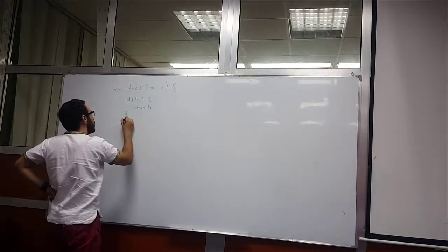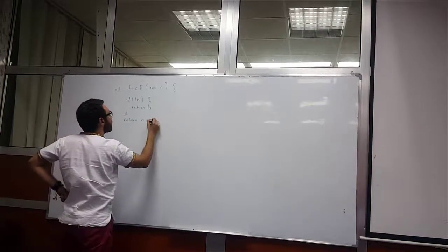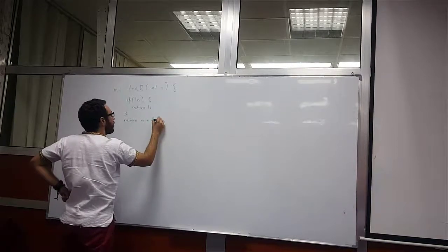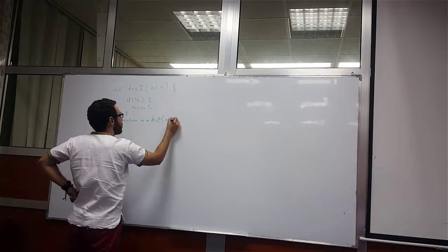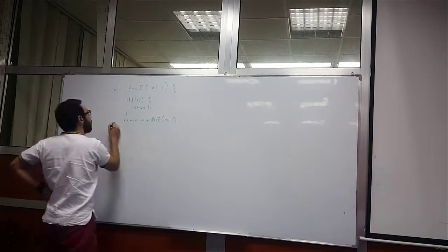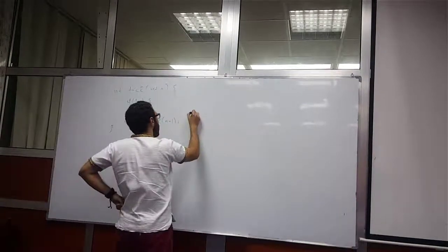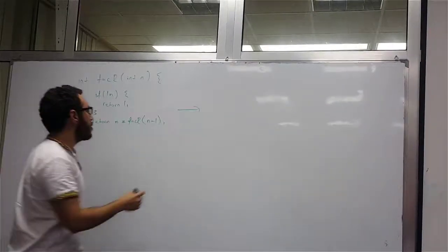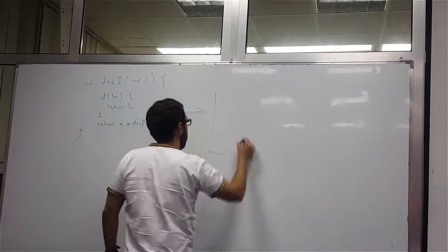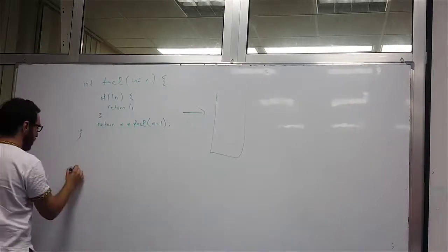Otherwise we return n times recursive factorial(n minus 1). So if you remember, once we deal with this recursive factorial function — let's say we also have the main here.